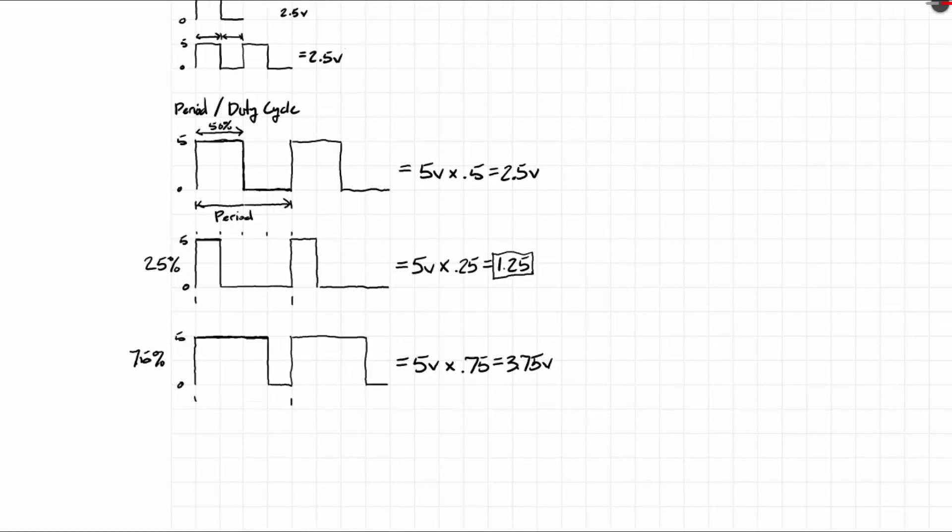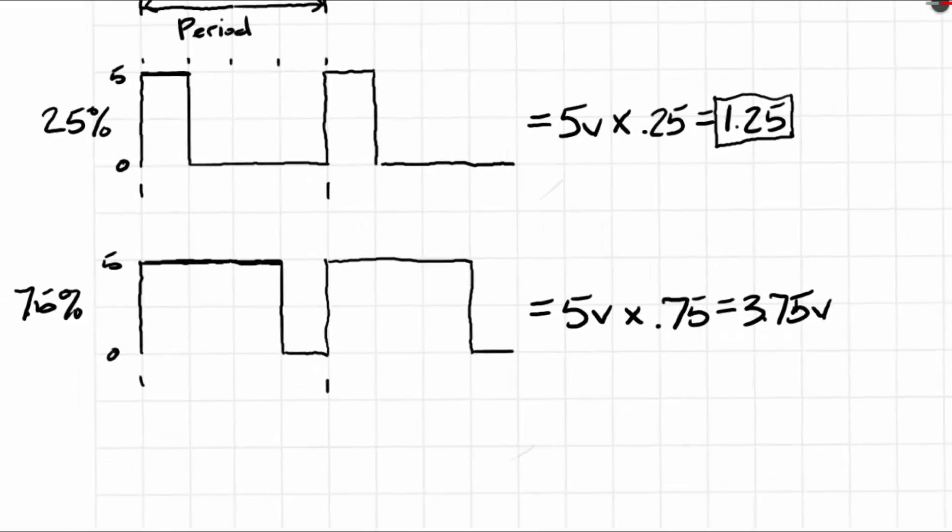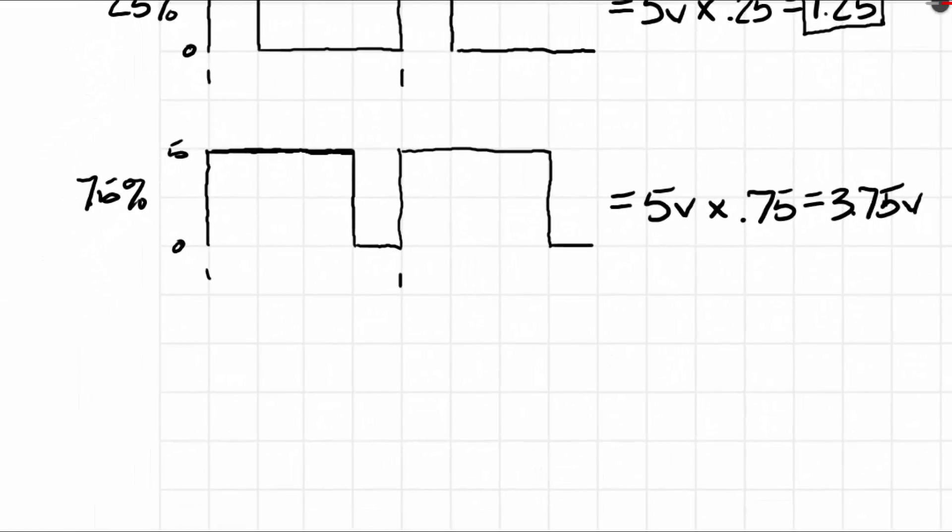So what registers do we have to adjust in the ARM microcontroller to achieve pulse width modulation? The first one is the timer. We're going to use timer 1, the ARR register, which is the auto reload register.